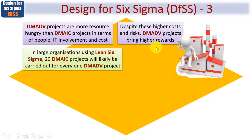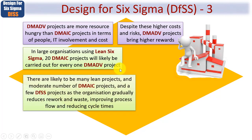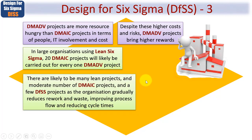Now in large organizations using Lean Six Sigma, using a typical example: around 20 DMAIC projects will likely be carried out for every one DMADV project. In other words, DMAIC is more often needed and used, because there are likely to be many Lean projects, a moderate number of DMAIC projects, and very few DFSS projects — as your organization gradually reduces rework and waste, improves process flow and reduces cycle times.